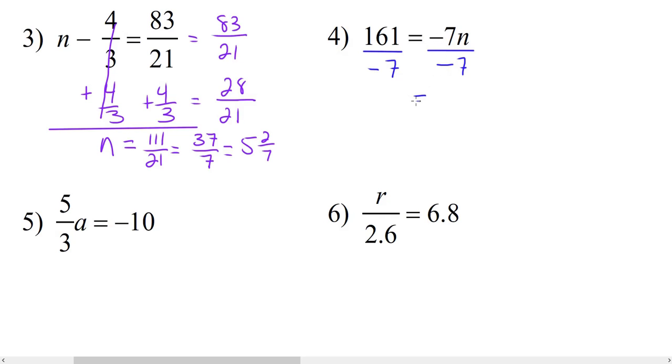So on the right, the negative sevens cancel each other out, leaving us with n. And on the left, 161 divided by negative 7 is negative 23.